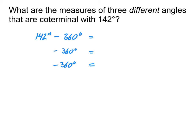And so if I take my original 142 degrees and subtract 360, that gives me negative 218 degrees. And if I take that negative 218 and subtract 360 and subtract 360, then that gives me negative 578 degrees.